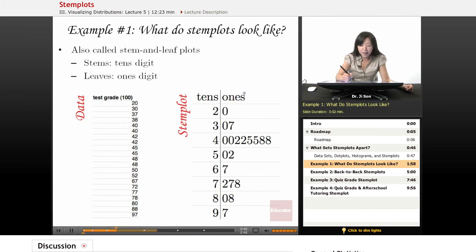Let's look at it on a stem plot. On a stem plot, we put the tens in one column. So the tens that we have are two, three, four, five, six, seven, eight, and nine. And here are the ones numbers.